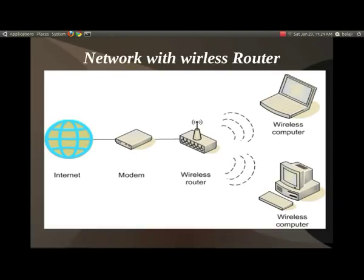Let me show you a typical wireless network setup. You connect to the internet via a modem, which is connected to a wireless router, which then connects to all the wireless devices in your home. Here I have a laptop and a desktop with wireless adapters connecting to the router, and the router connects to the modem, which connects to the internet.